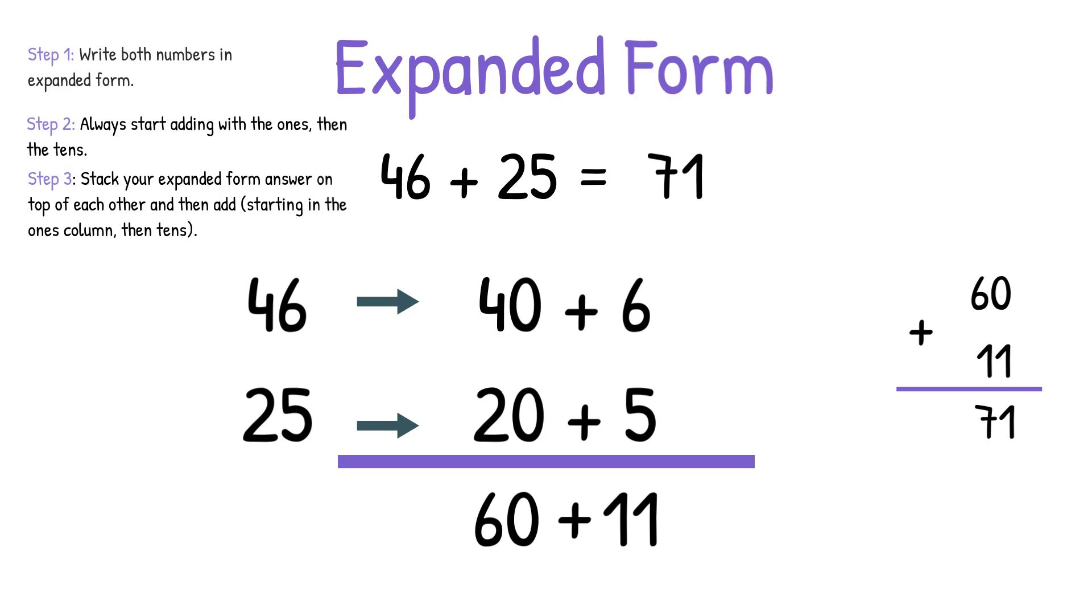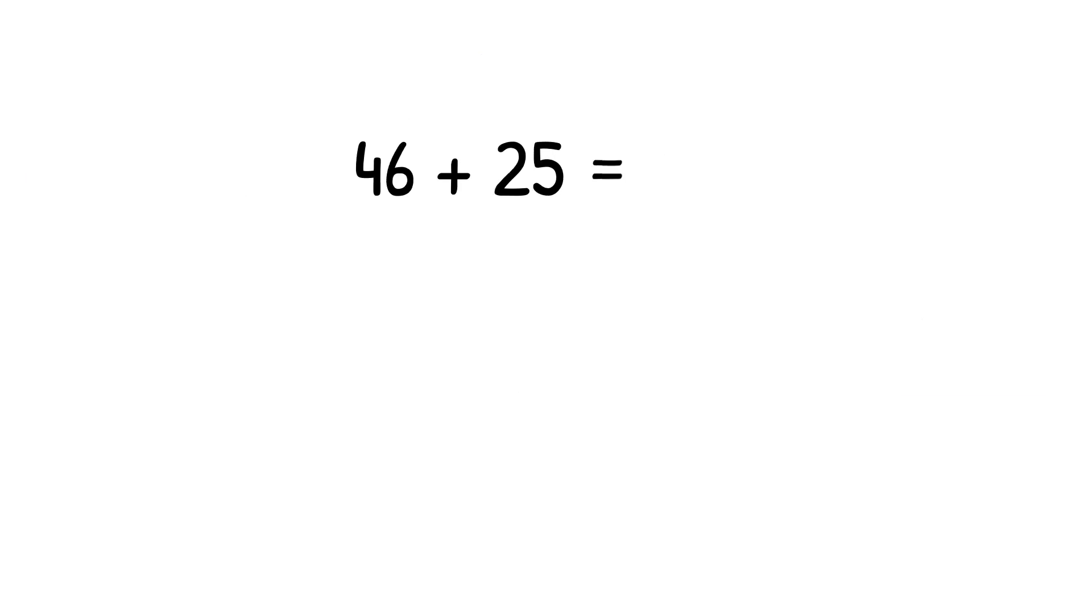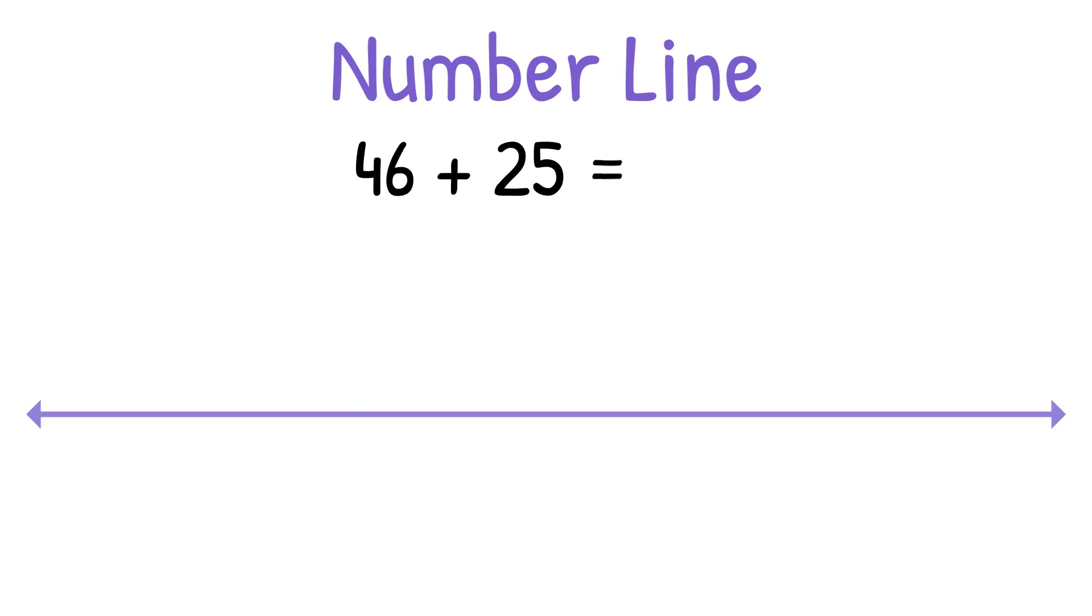Last, we will solve the same equation using the number line strategy. First, you want to draw your open number line and start at 46. We're adding 25, so first we'll make a big jump for the 20. This is when skip counting comes in handy. 46 plus 20 equals 66.